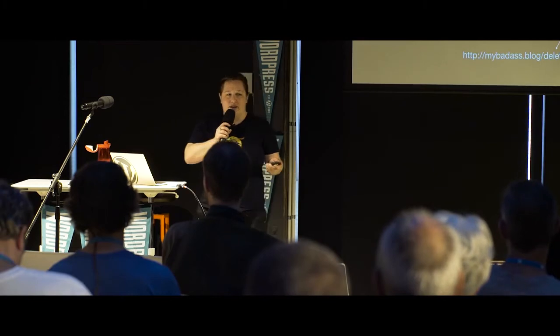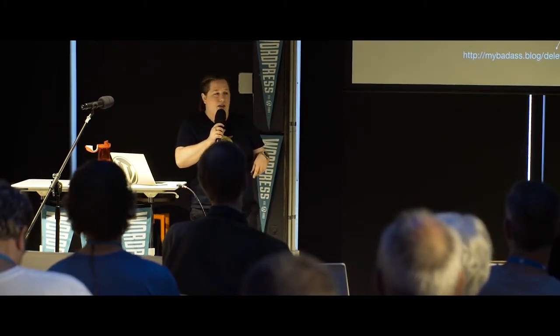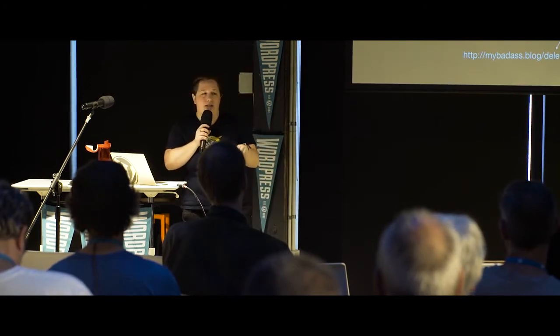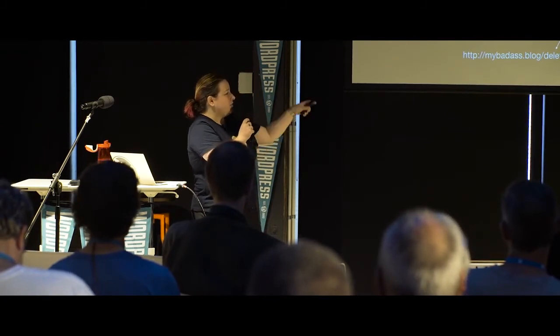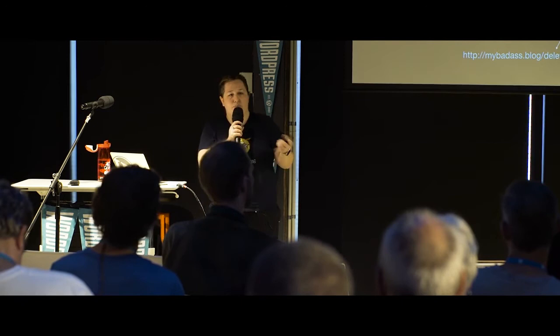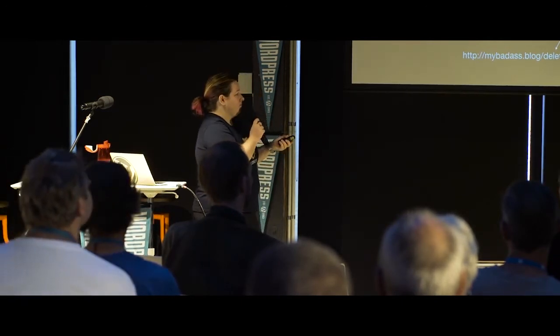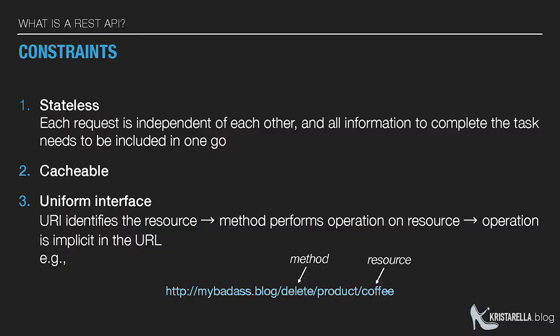It should have a uniform interface. A URI or URL identifies the resource that you want to get or perform an action on, and generally the operation you want to perform should be implicit in the URL. In this example you've got your website, then delete is the method or operation, product is the type, and product coffee is the type of resource — but sometimes your method will go in another part of your code.